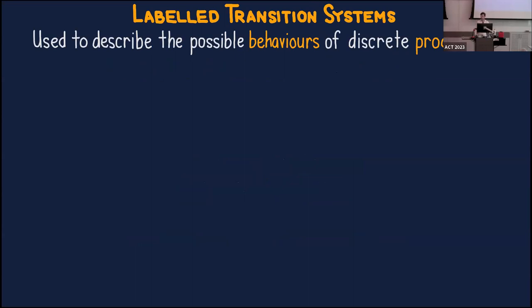I'm going to do that by talking about a specific kind of bisimulation, which is bisimulation of labeled transition systems. Before I do that I should tell you a bit about labeled transition systems. The idea of labeled transition systems is to describe the possible behaviors of discrete processes — mathematical structures quite commonly used in computer science to model things.